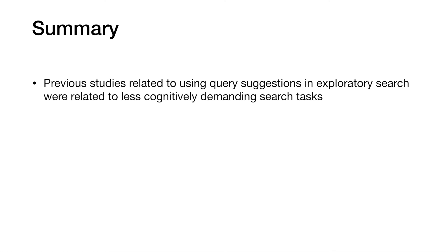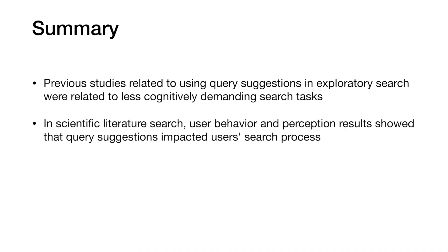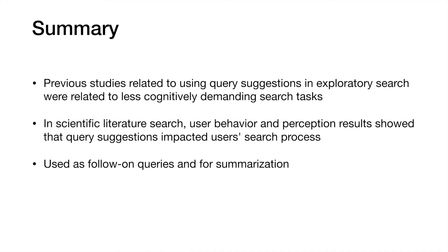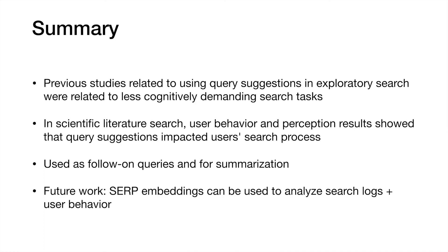In summary, while previous studies on query suggestions in exploratory search were designed around less cognitively demanding tasks, we found that when applied in a knowledge acquisition setting like scientific literature search, they could have a quite dramatic effect on user behavior and perception. Participants highlighted the query suggestions' summarization properties — their confidence that search results matched what they were searching for, and how easy it was to see where results were no longer correct — rather than using them as follow-on queries. In future work, we want to use our SERP embedding method not in a live system but as a method to help us analyze search logs and user search behavior. Thank you for listening and we'll be happy to answer any questions during the conference.